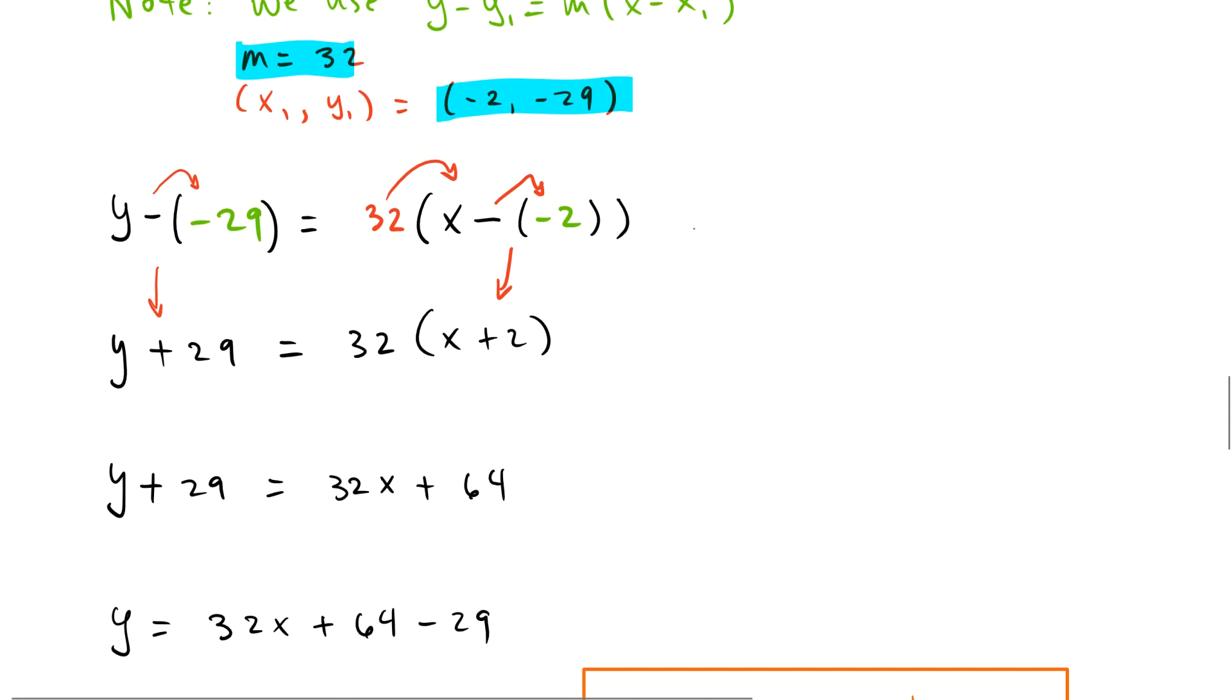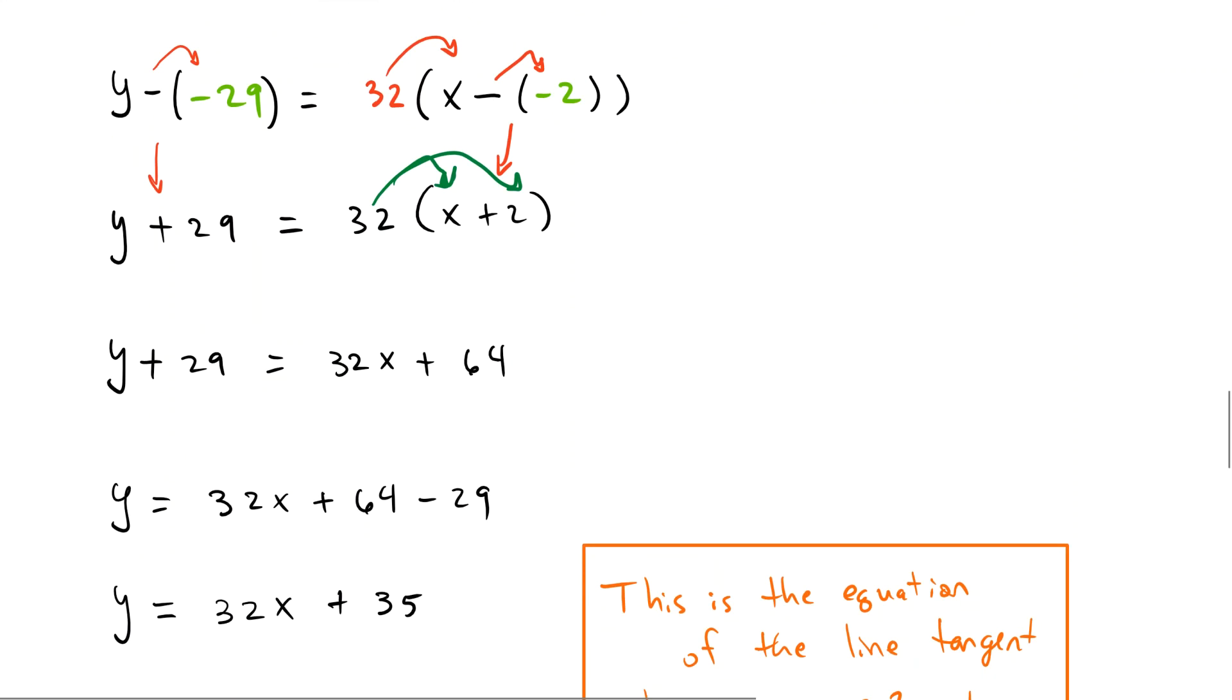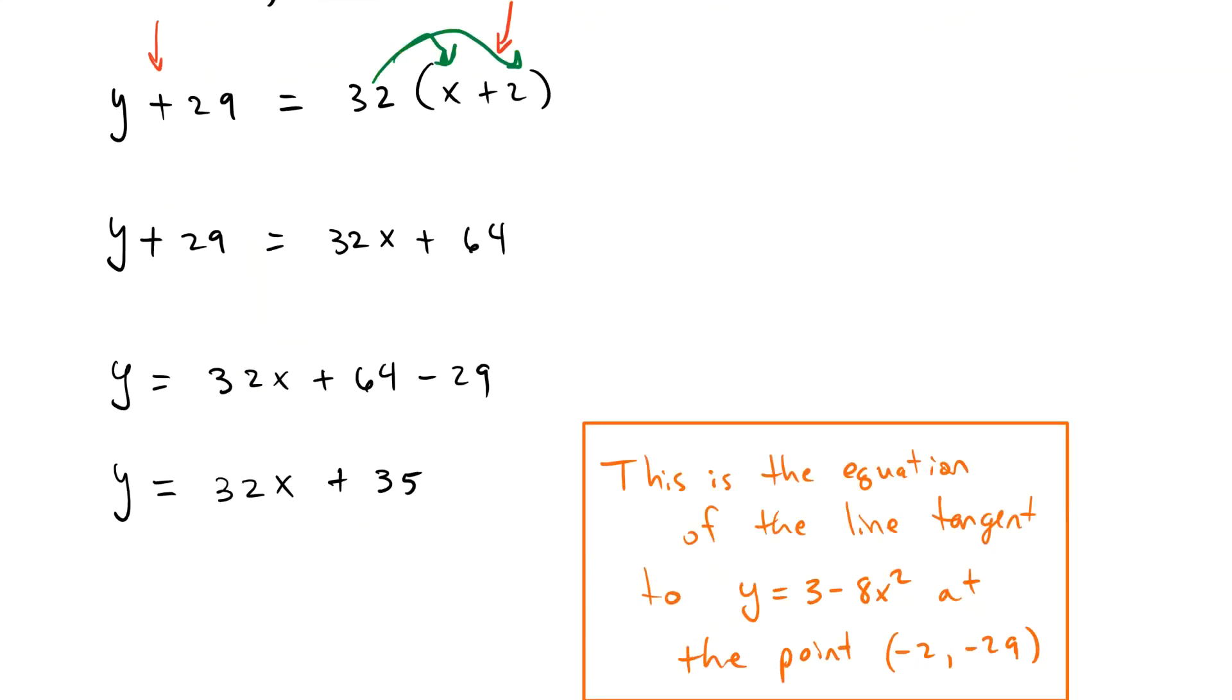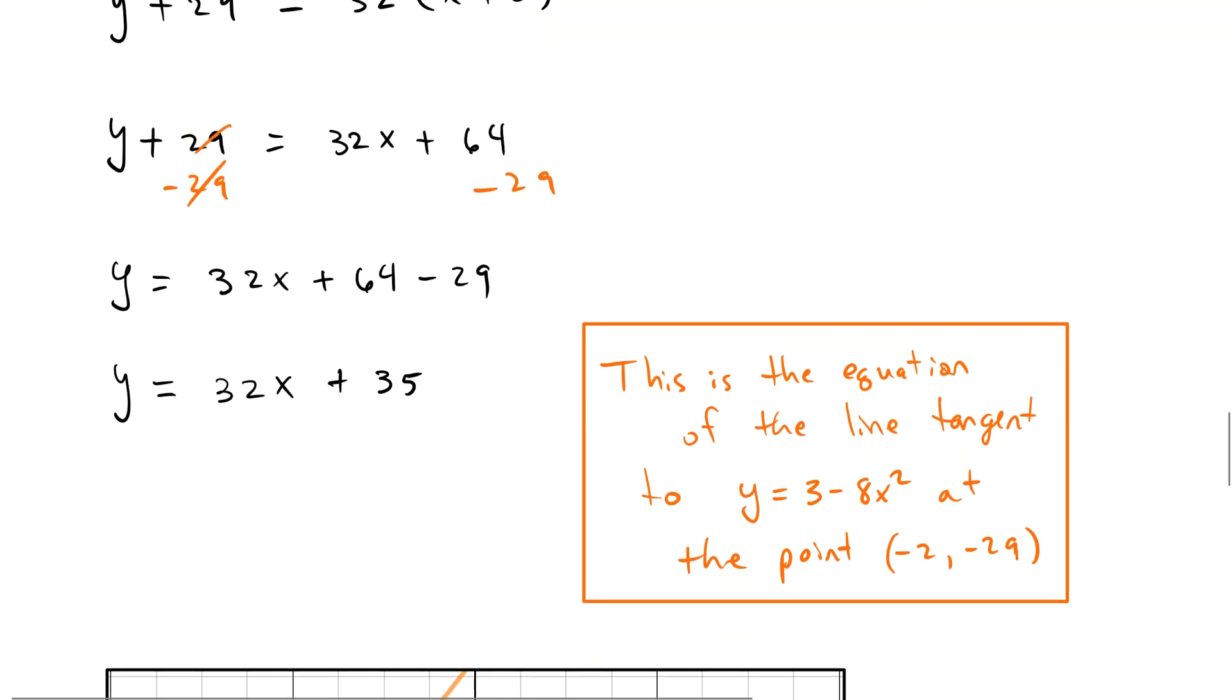And now when we multiply through the 32, we get 32x plus 64. Now we take the 29 to the other side. Minus 29 on both sides. And this cancels. And 64 minus 29 is 35.